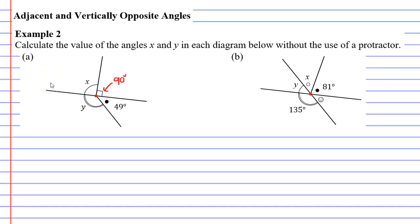because you will notice we've got a nice straight line. And that means that angle X and the 90 degree angle must add up to 180 degrees. So X is 180 minus 90. X actually equals 90 degrees as well.